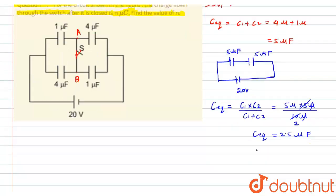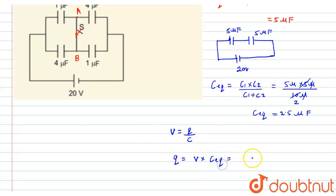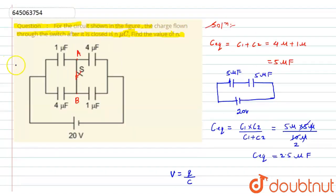We know that the charge on a capacitor is given by Q = V × C. So the required charge flowing through the circuit is Q = V × C_equivalent = 20 × 2.5 μF = 50 μC.